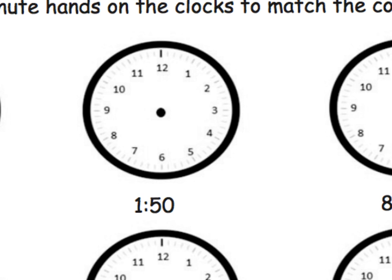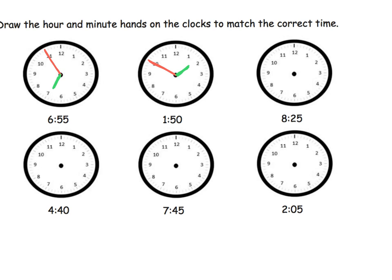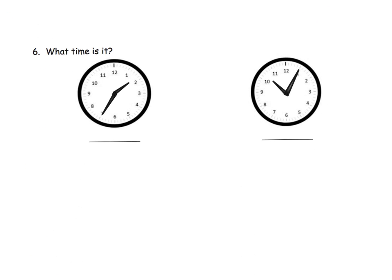For 1:50, the minutes seem to be the easier part — the minute hand goes to the 10, right there, that's our 50. Now where is that hour hand? It's not going to the 1 — it's going to go beyond the 1, almost to the 2, because we're almost at two o'clock. That's the idea, parents and teachers. Let your students go to that GeoGebra applet and play, so they get instant feedback and can see if they're right right away — rather than doing homework and waiting until the next day.